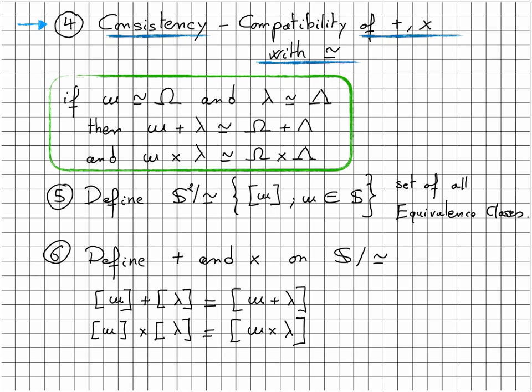It is now time to define the partition of S or the set of equivalence classes. Now, step 6. We can safely define addition and multiplication on the partition of S. The sum and the product of two equivalence classes are defined here. In other words, the composition of two equivalence classes is defined by the equivalence class of the composition of two elements of each class.